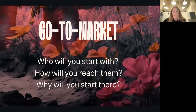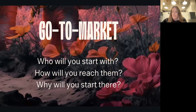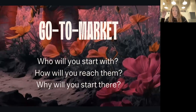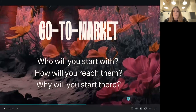For go-to-market strategy: simply put, it's who are you going to start with, how are you going to reach those people, and why are you starting with that group? For example, you might be starting with students in the UK because you used to work across different universities, so you've already got the network, you've done research, you know they'll pay a certain amount, and you know how to reach them through a specific channel. It's not just 'I'm using SEO and guessing' — it's an informed strategy for how you're going to get your first users.